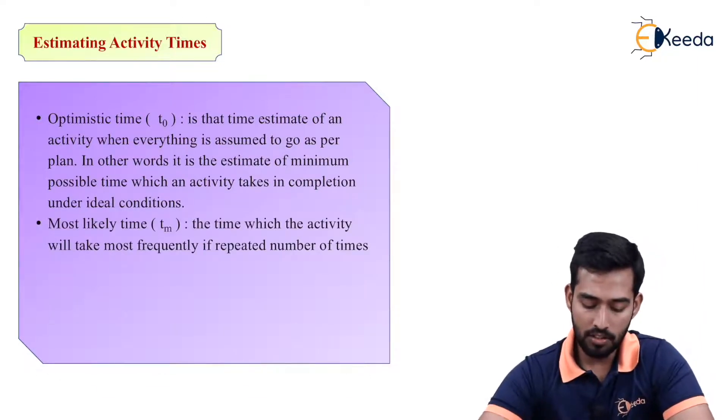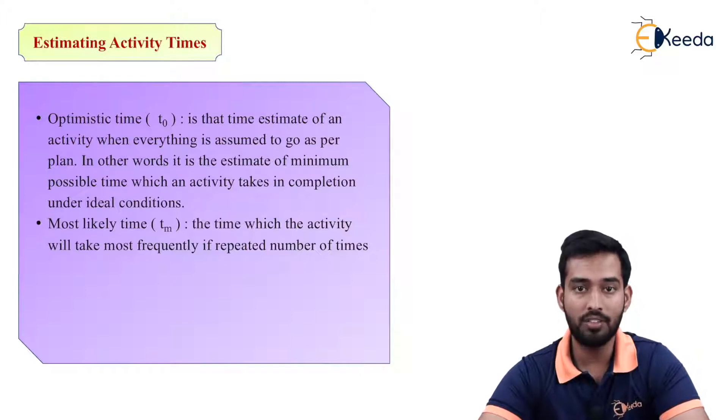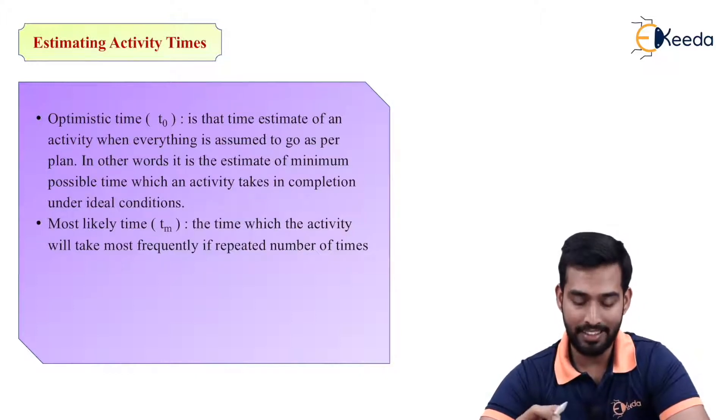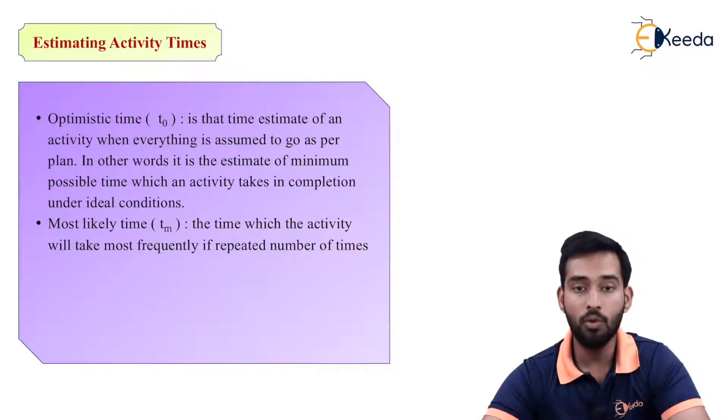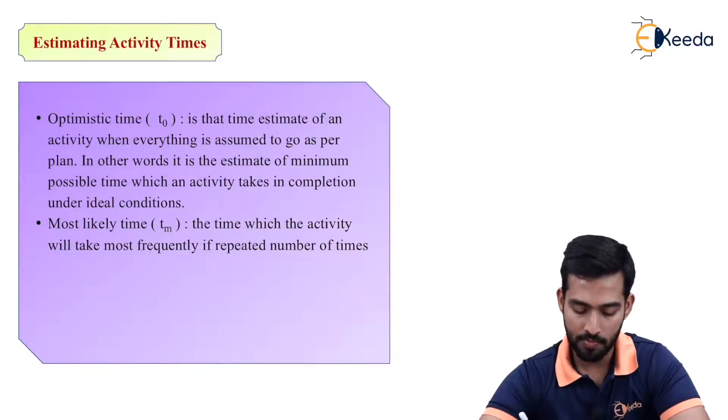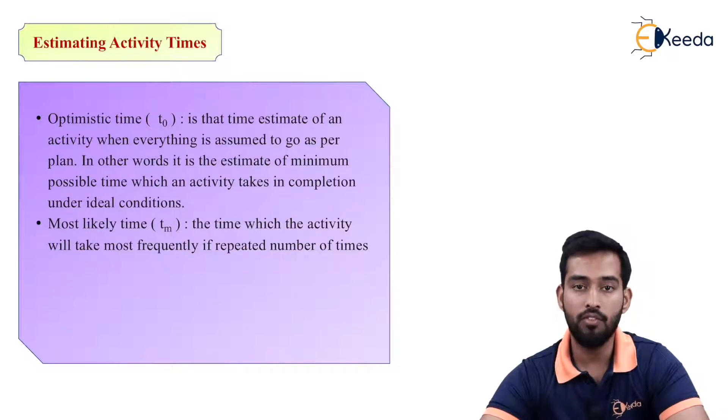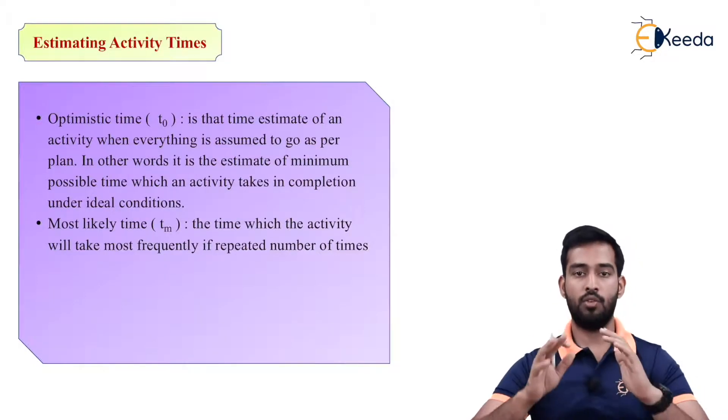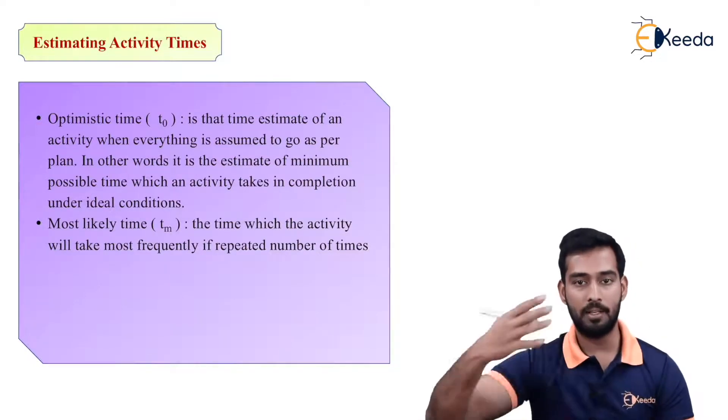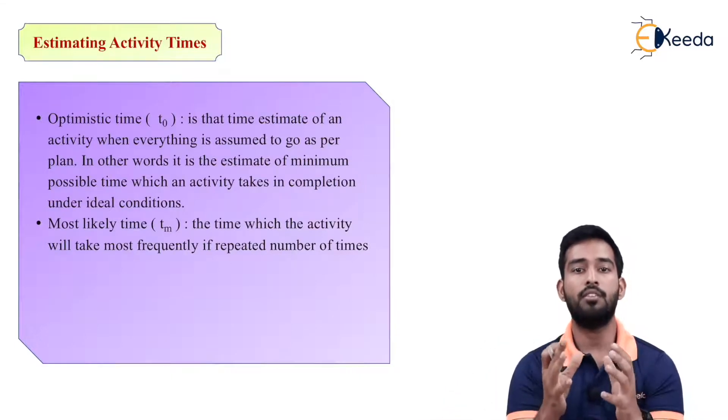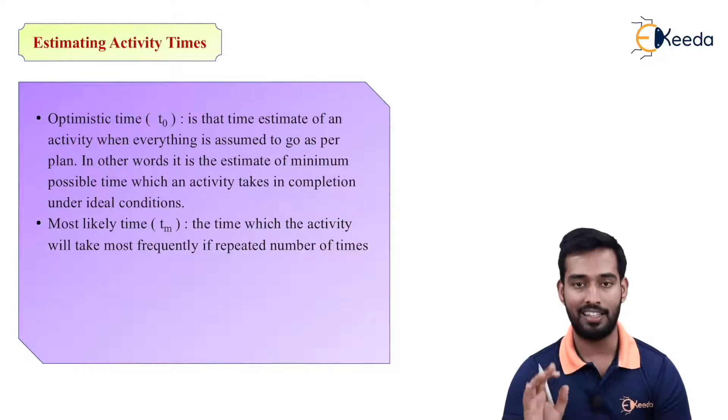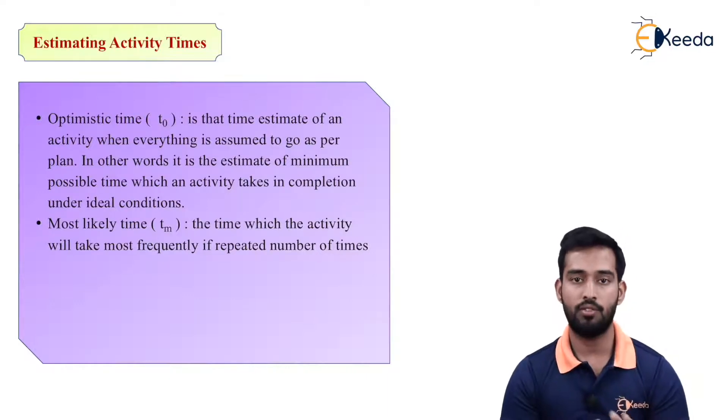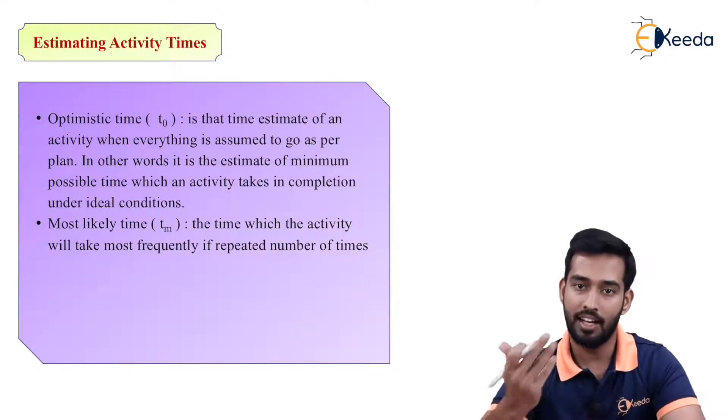Then most likely time. Now we have to calculate most likely time. It is noted by TM. The time which the activity will take most frequently if repeated number of times. So if we are doing the same activity in repeated number of times, the amount of time it required to complete that activity, that is known as your most likely time. Then we calculate by your experience.